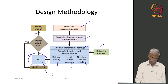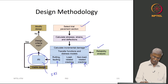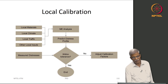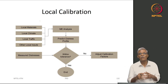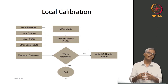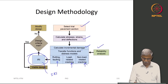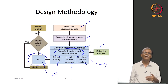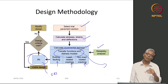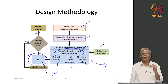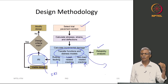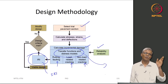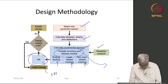An important concept is local calibration. Transfer functions vary depending on location. An identical bituminous mixture subjected to identical load at Nagpur versus Chennai will not behave the same way because of differing temperature conditions. Traffic speed also differs — trucks on Chennai roads may travel at much slower speeds than at Nagpur — so loading rate sensitivity also plays a critical role. Local materials, local climate, local traffic, and other local inputs should enter the ME analysis.